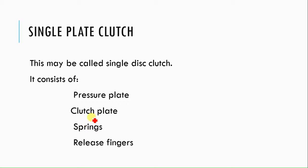Now we will discuss the single plate clutch. The single plate clutch basically consists of four basic components: one is the pressure plate, another is called the clutch disc, the third one is the spring, and the fourth one is the release finger lever.